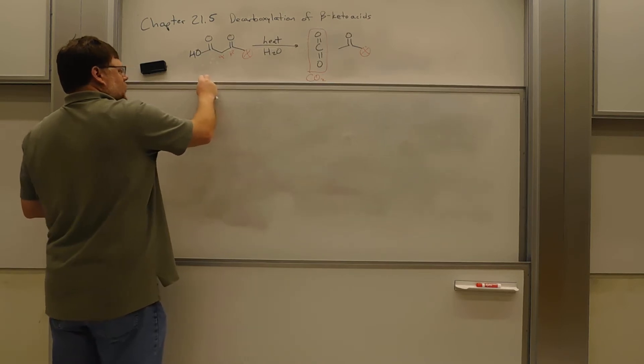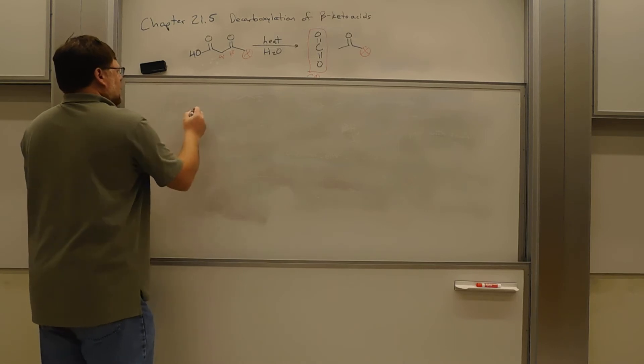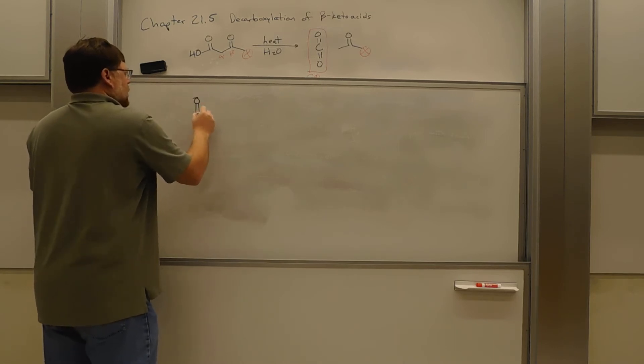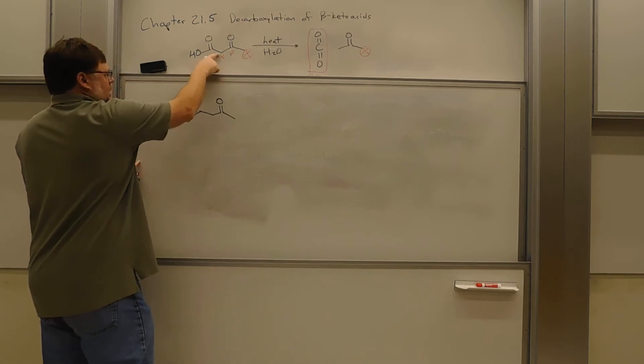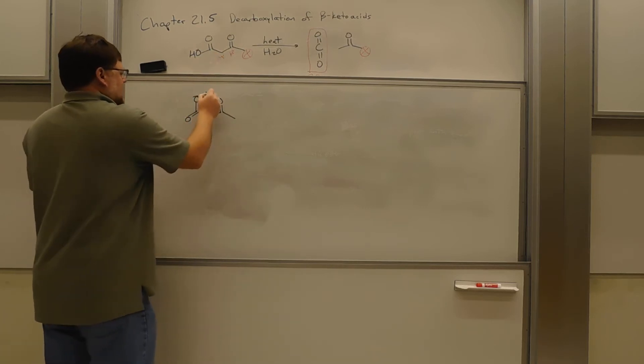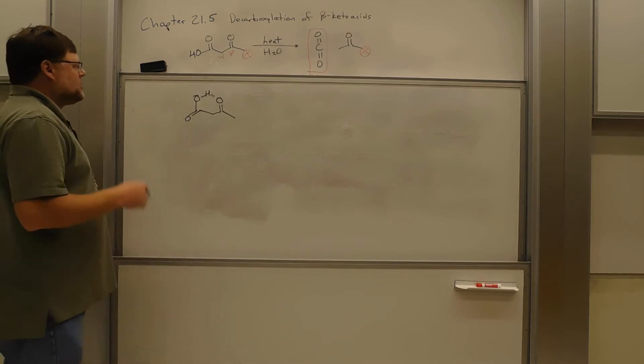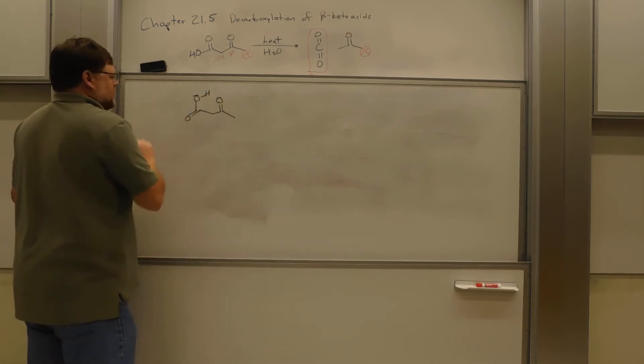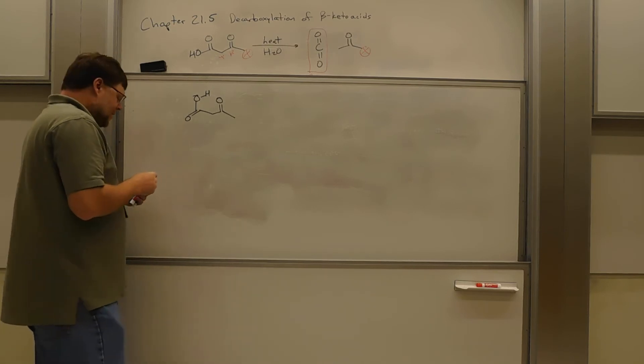Think back to the Diels-Alder reaction for just a moment. I'm going to rotate around the acid-alpha-carbon bond. And you get this, right? That's actually how that's going to look, because you get this intramolecular hydrogen bond that's quite stabilizing. So now when you heat this up, the hydrogen bond's there.